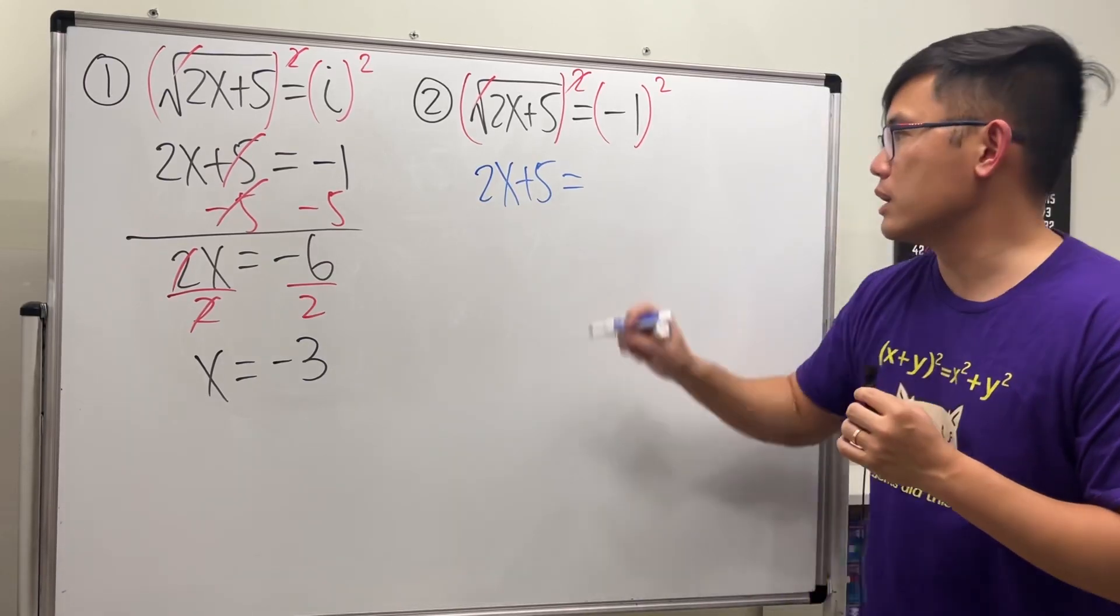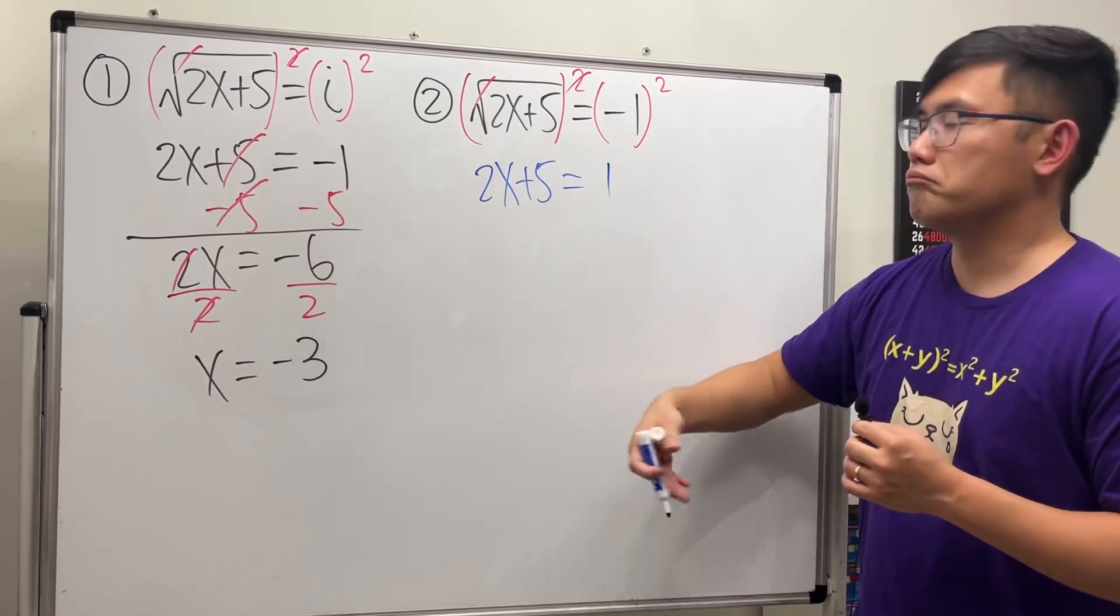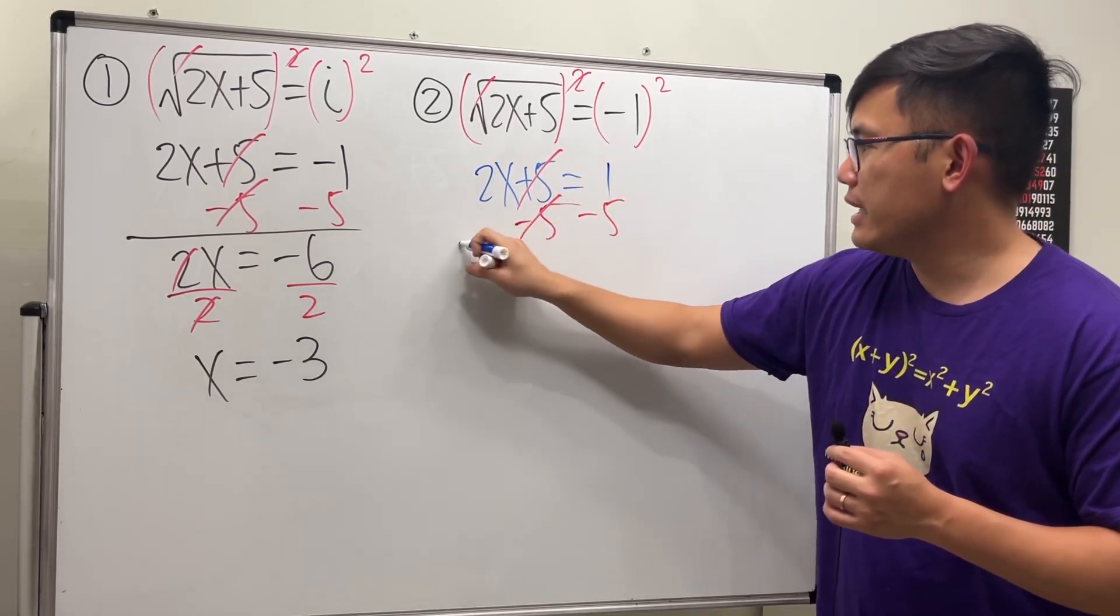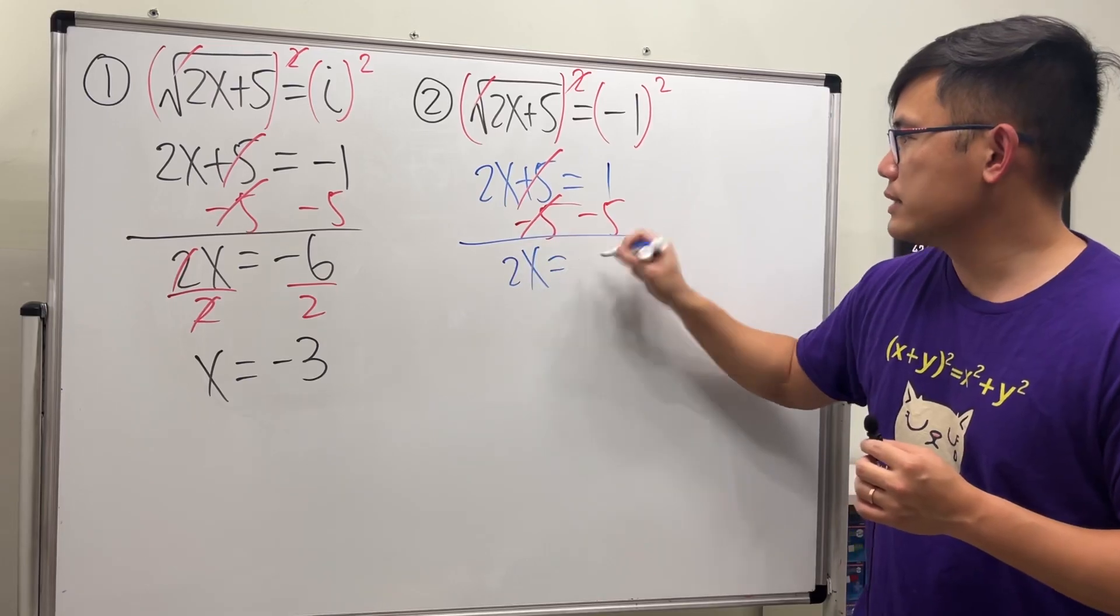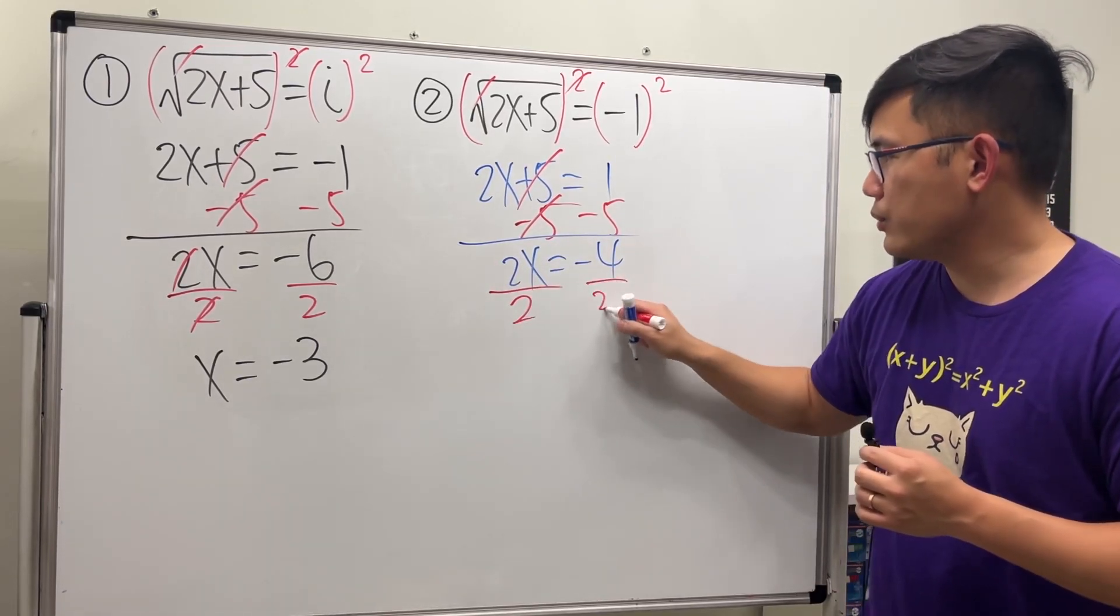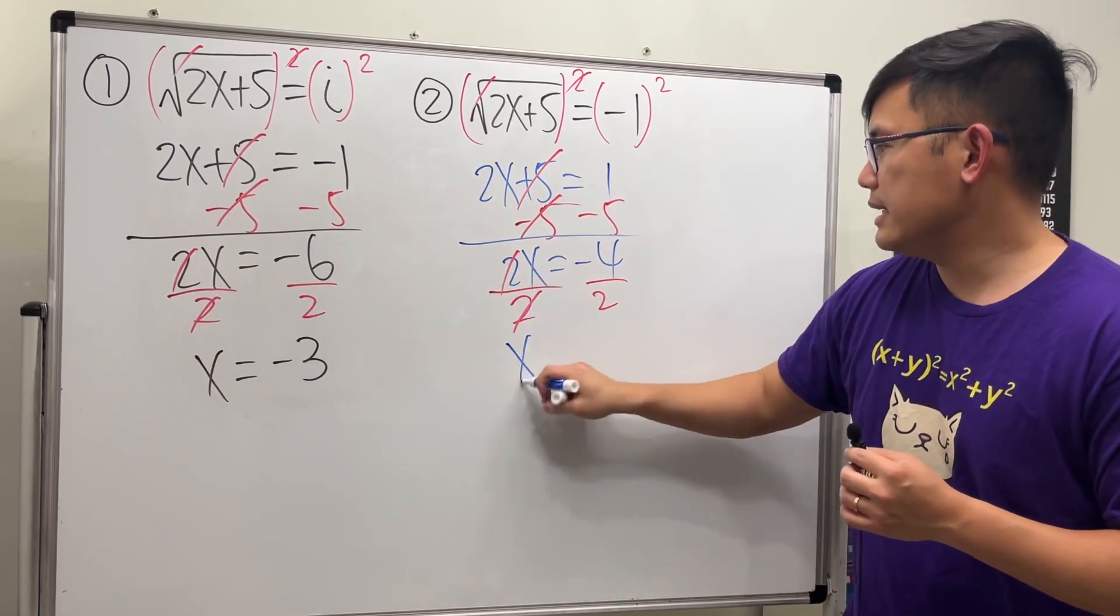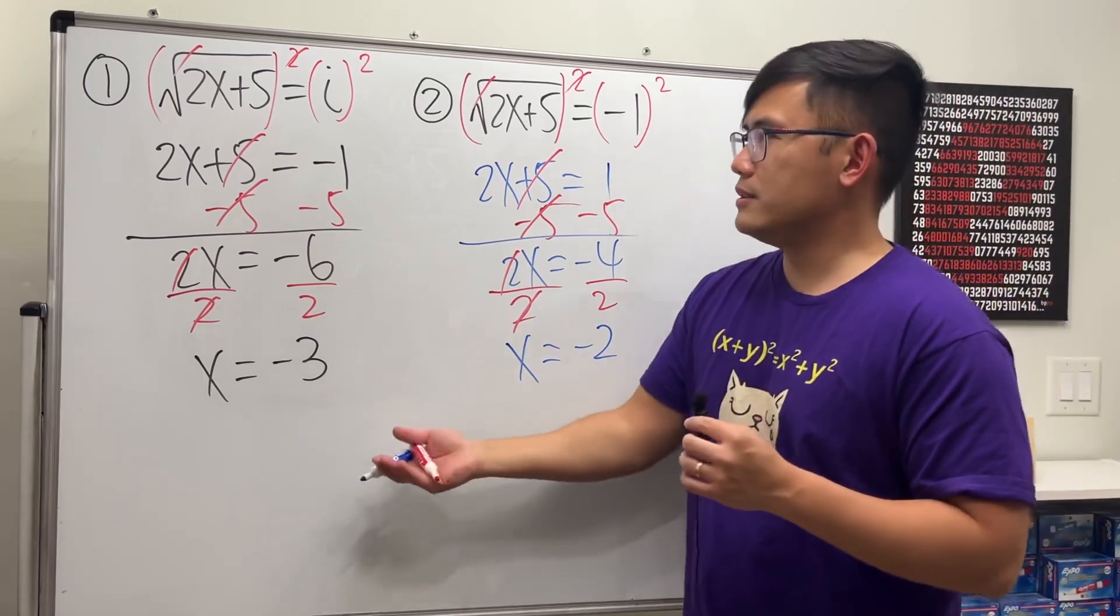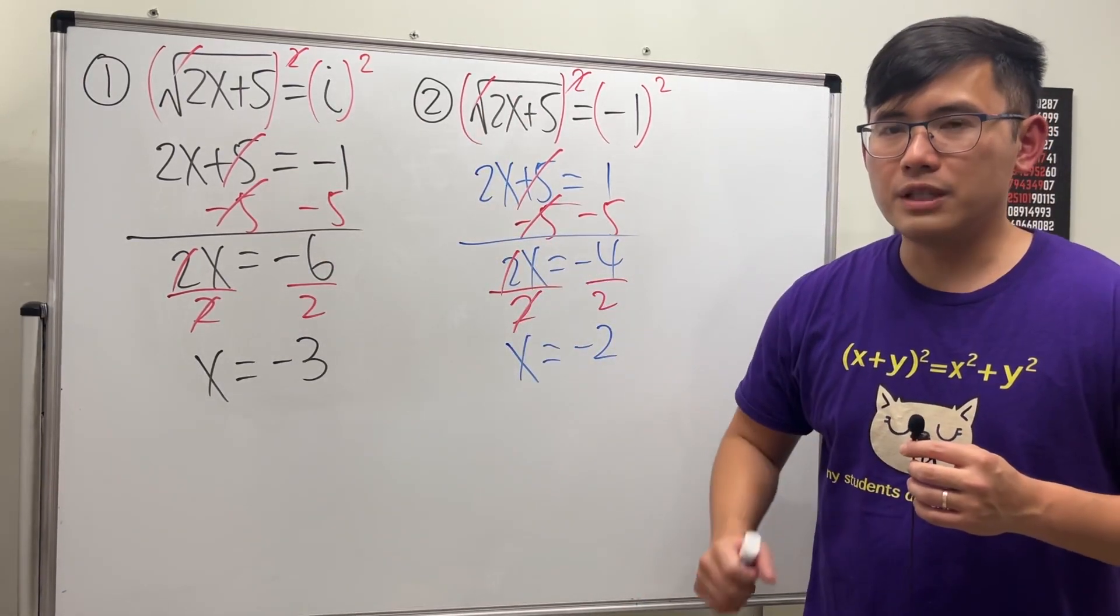Be careful this time. Negative 1 squared means negative 1 times negative 1, which gives us positive 1. Let's go ahead: minus 5 on both sides, so 2x equals negative 4. Then divide both sides by 2, and in this case we have negative 2.